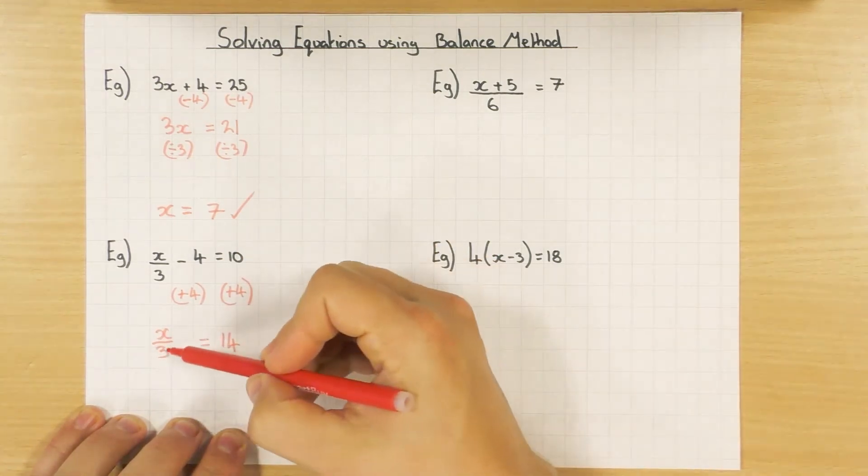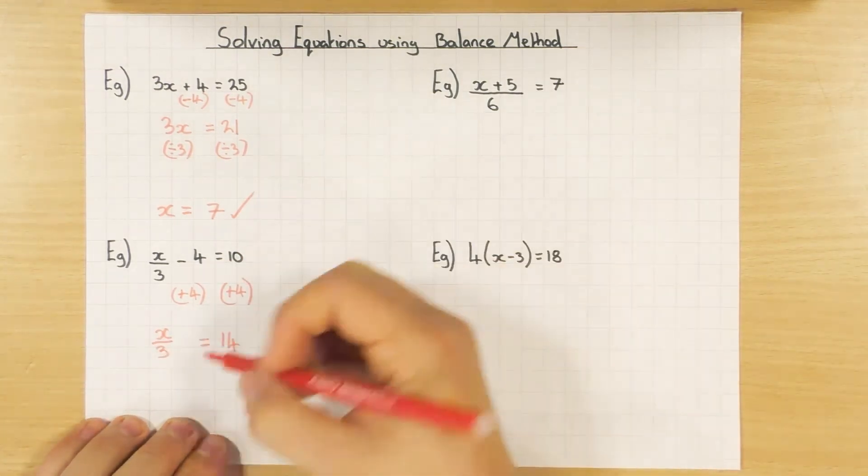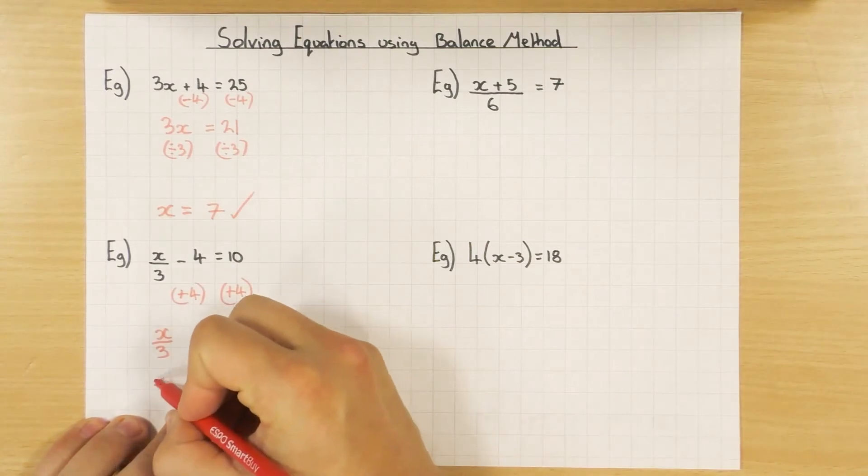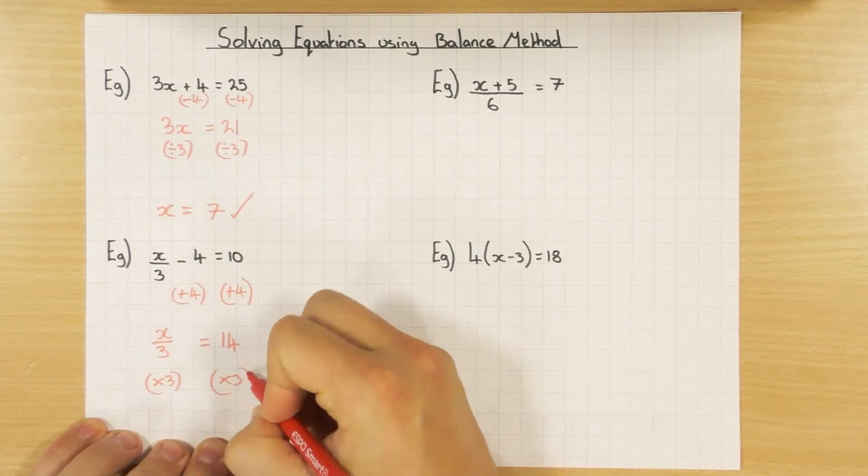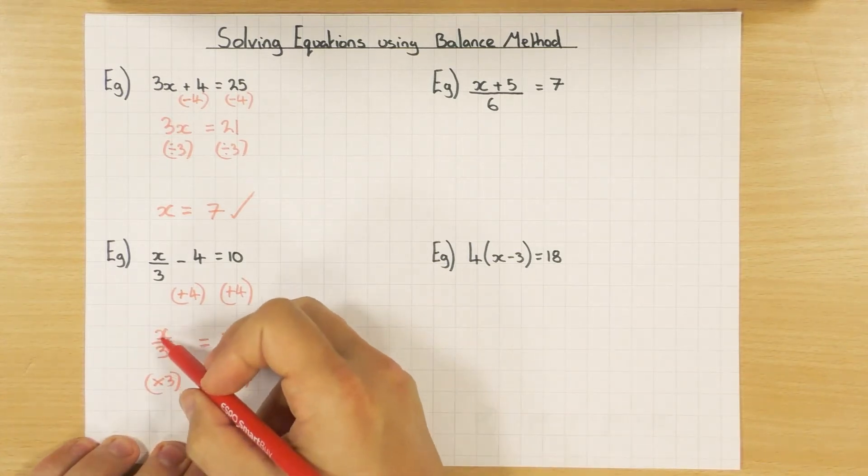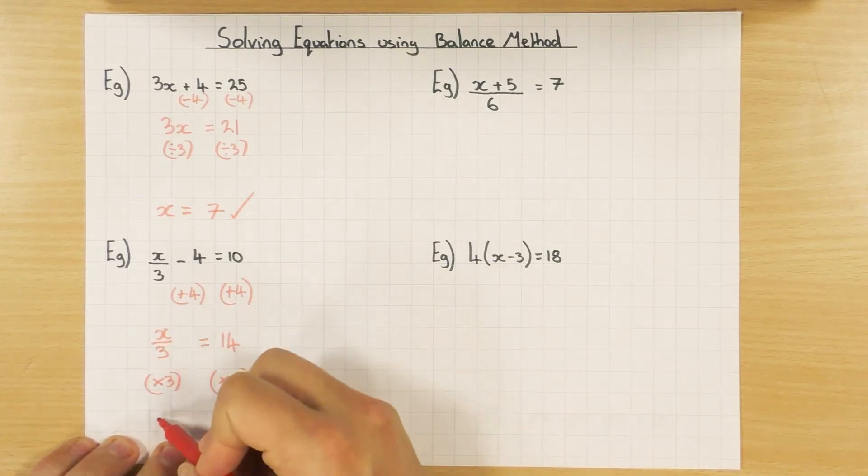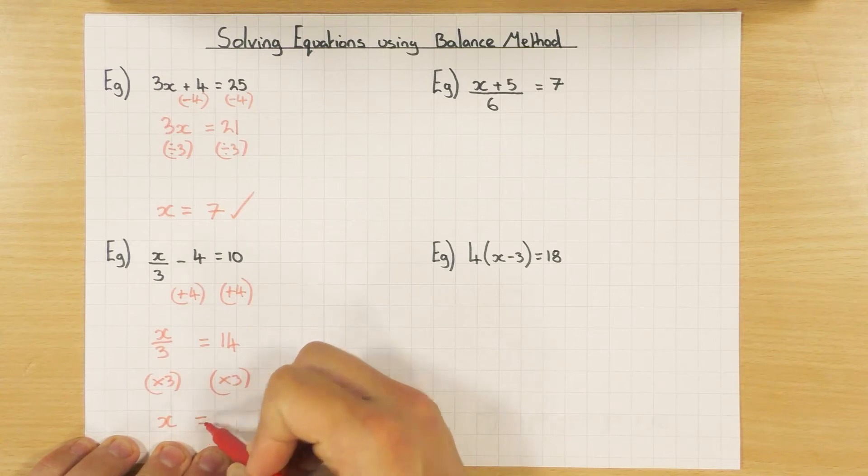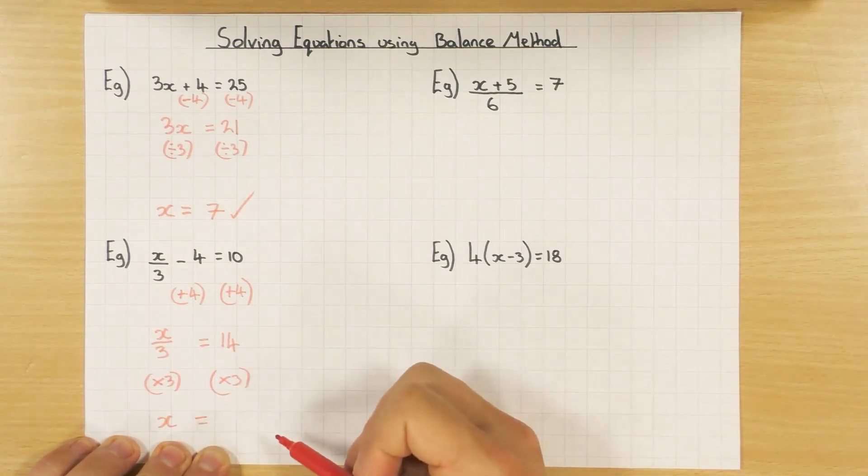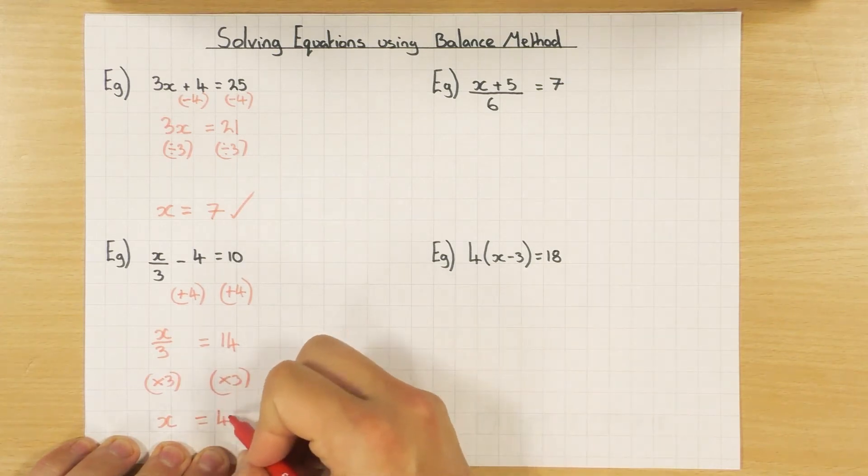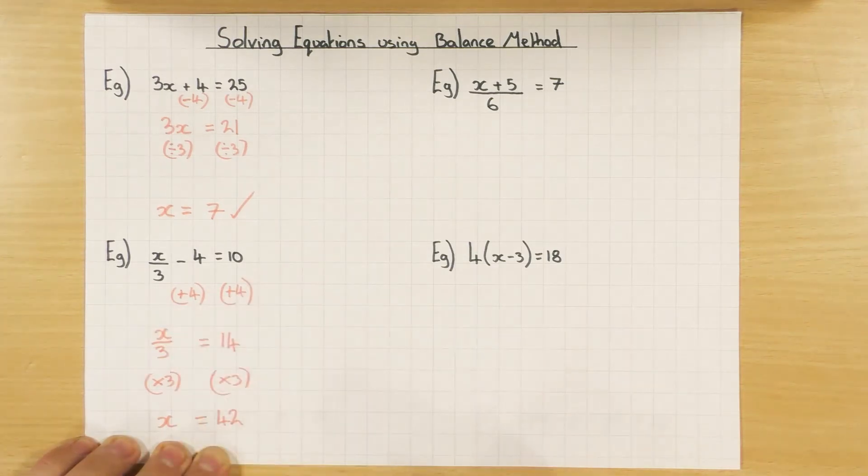Now, I now want to deal with this divide by 3. Again, I do the opposite. So I times by 3 both sides. And therefore, x divided by 3, but times by 3, leaves me with x. Happy days. 14 times 3, or 10 times 3 is 30, 4 times 3 is 12. Add them together. We have 42. And again, you can substitute that back into there and check it works.